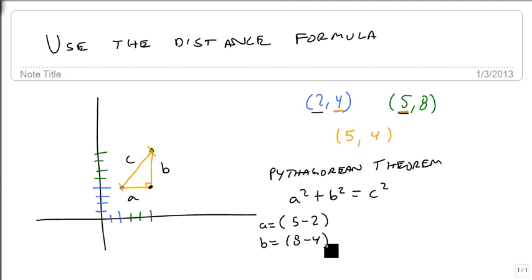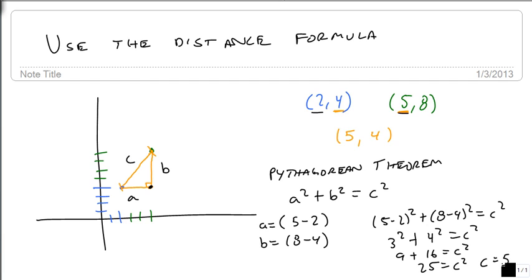So if we plug these in, we get 5 minus 2 squared plus 8 minus 4 squared equals c squared. Well, that's 3 squared plus 4 squared equals c squared, which is 9 plus 16, which is 25. And since our c can't be negative, when we take the square root, we get that c is just the positive 5.